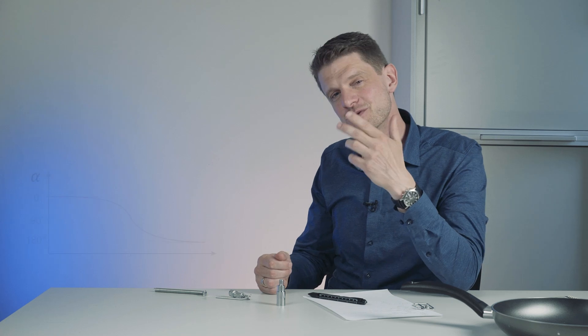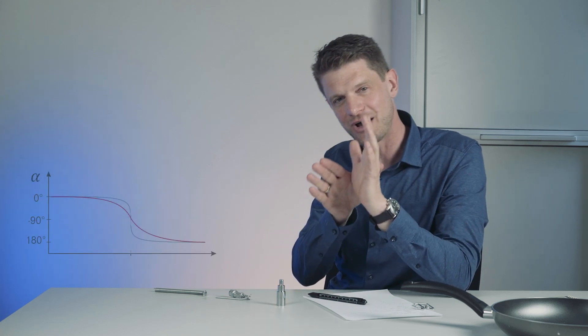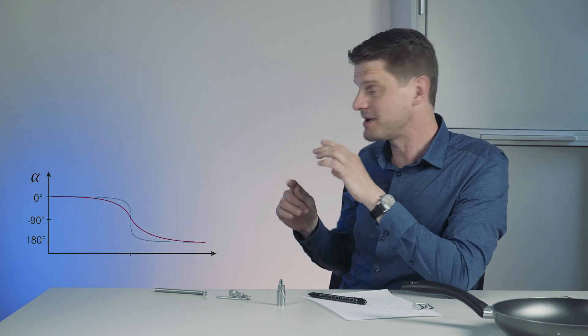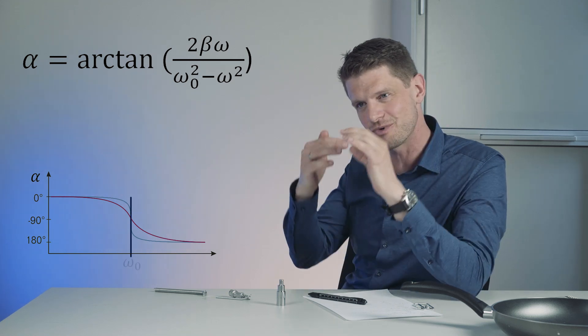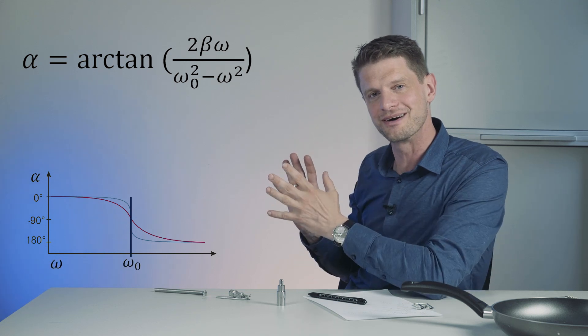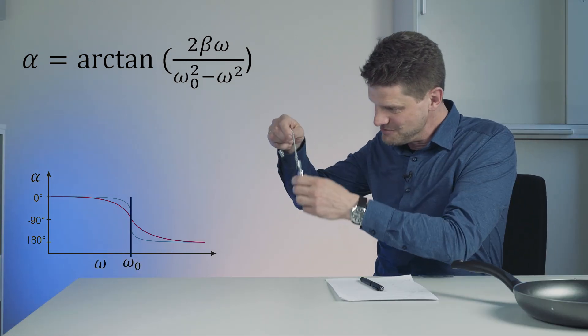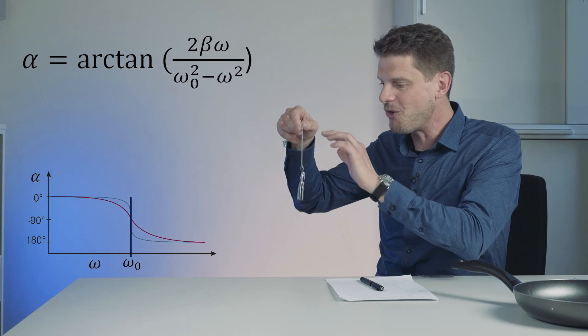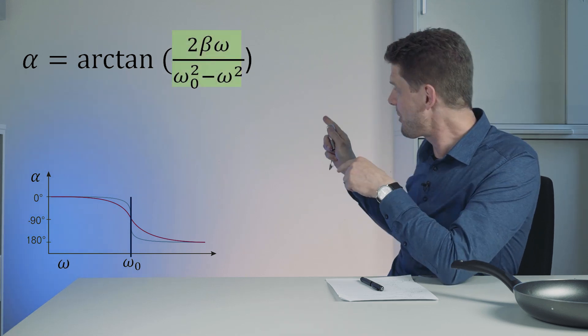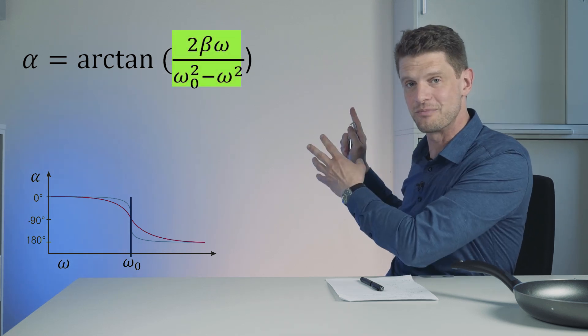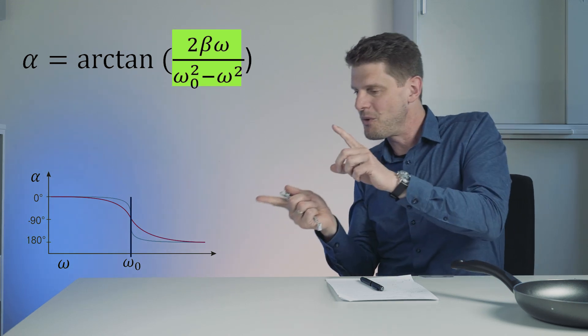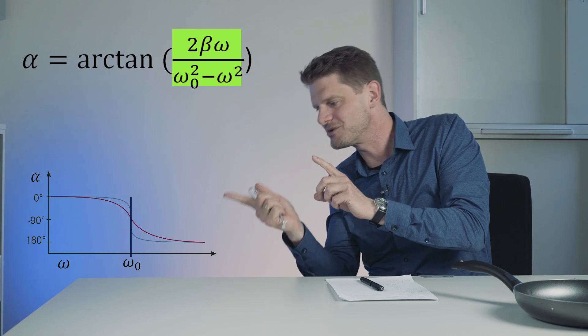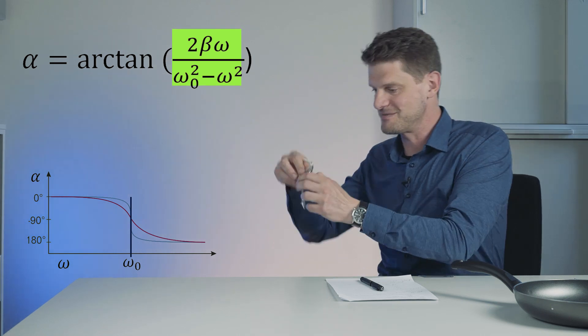For this angle between the input and the output signal, there's also a formula. I like to show it here. It's not very well known, but it's really useful to have this understanding in just a formula. If omega that we stimulate is below omega 0, this term will stay positive inside of the bracket. So arcus tangens from something positive will give us something between 0 and 90 degree. That's what we see.